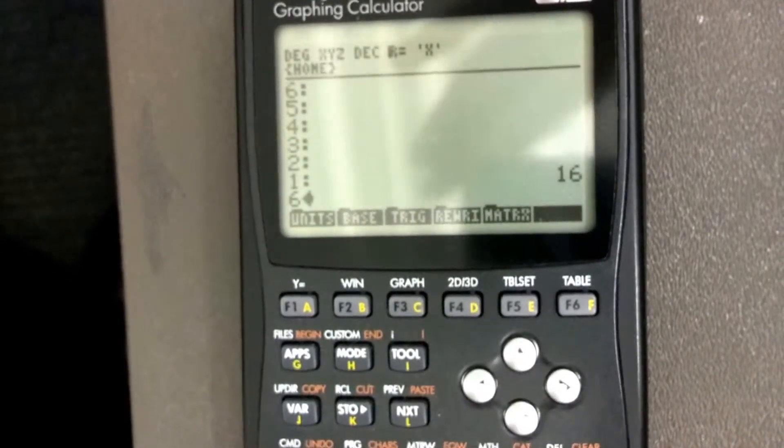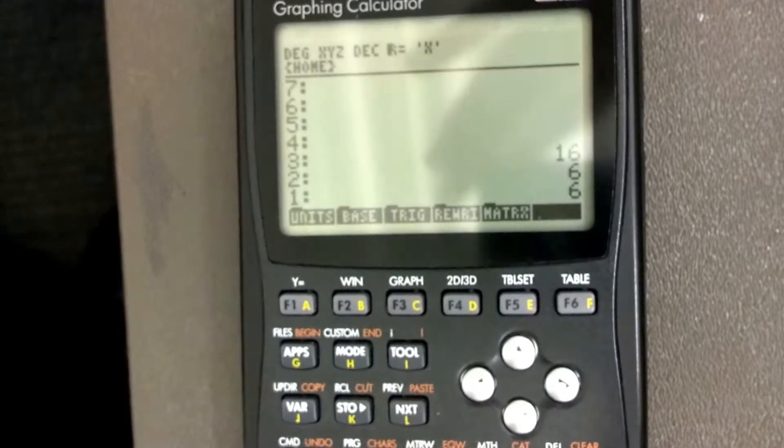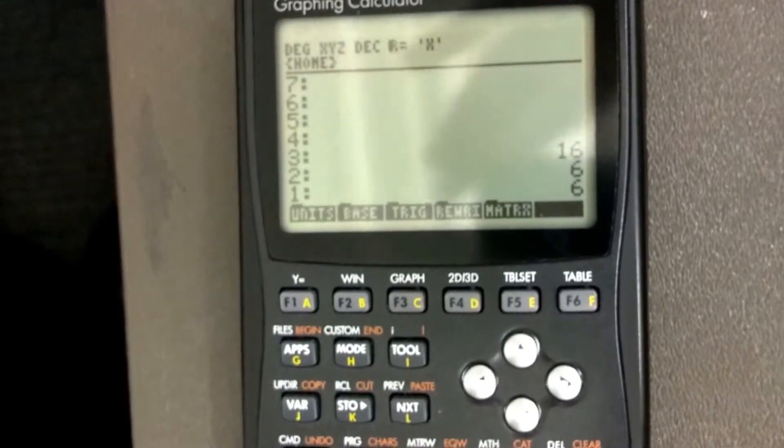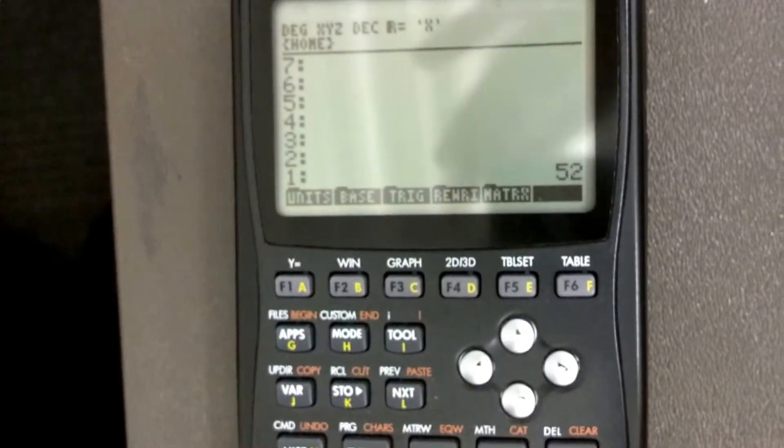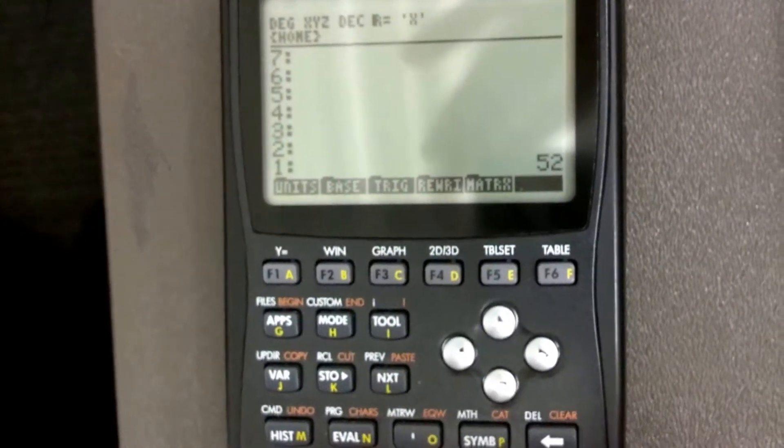And I need 6 squared, so I'm going to do 6, enter, enter to get another copy of it. Hit times to multiply the 6 times 6 to get 36. Now I need to add those, so I hit plus. I need the square root of that, so I hit the square root key.